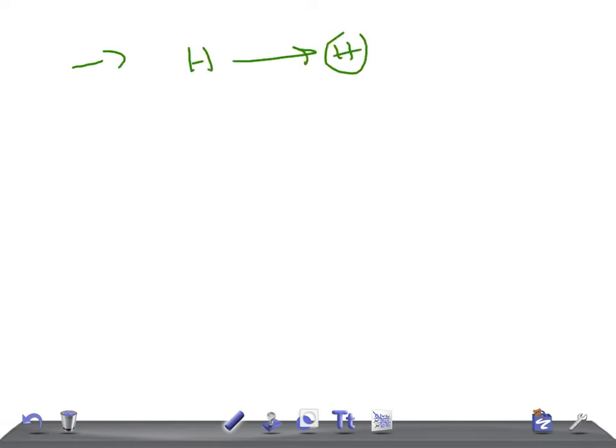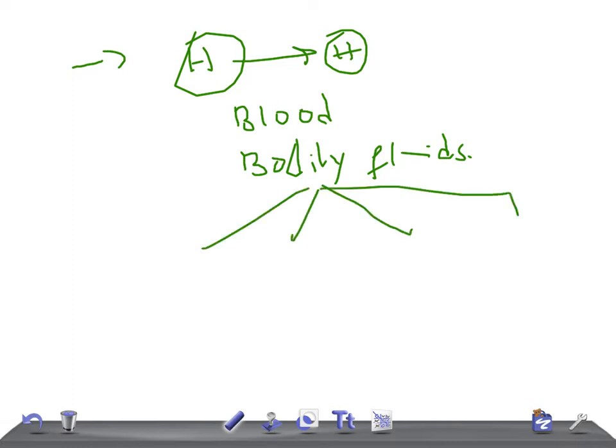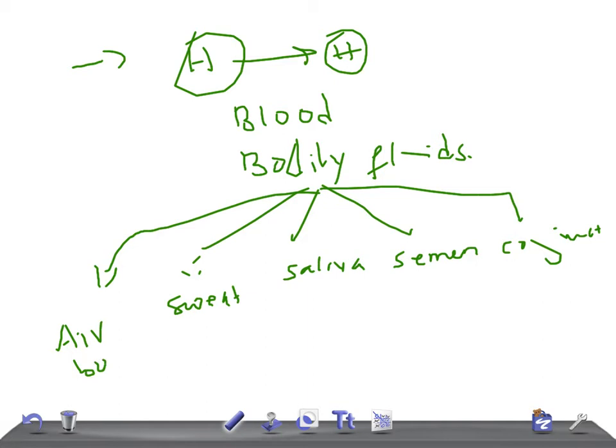Remember first how it is transmitted from human to human. It is transmitted either by blood or bodily fluids. The bodily fluids are sweat, saliva, semen, conjunctival secretions, or even airborne cannot be ruled out, but as of now there is no evidence whether this virus can spread through the airborne route.